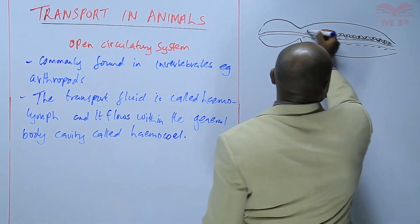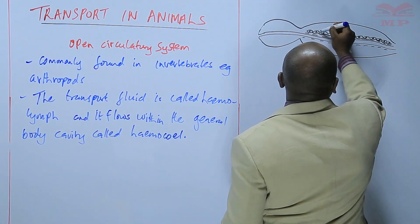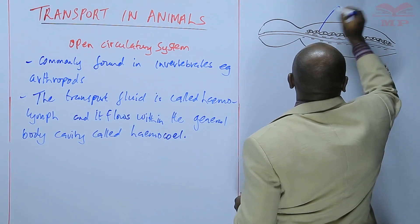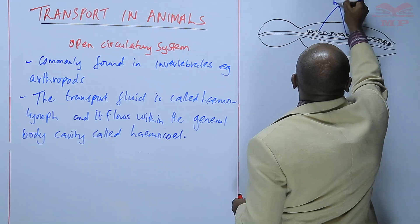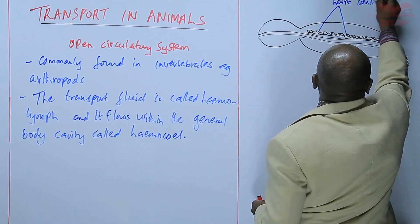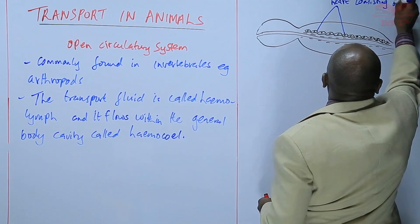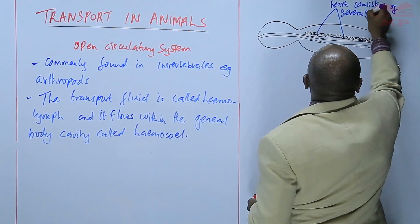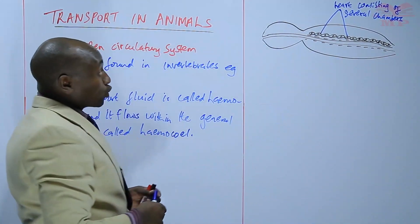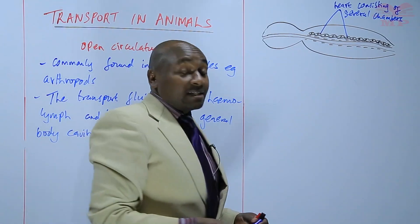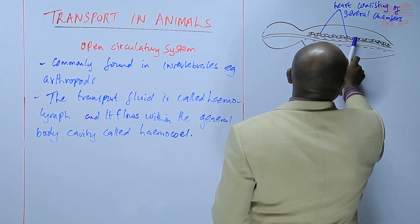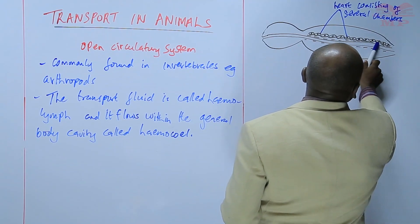The first part is a tube, and this tube is the heart, consisting of several chambers. In a cockroach, the heart is made up of 13 chambers.